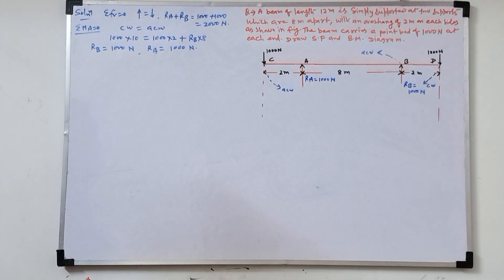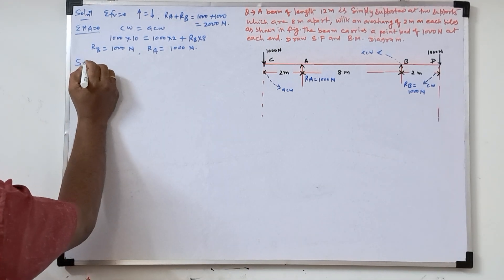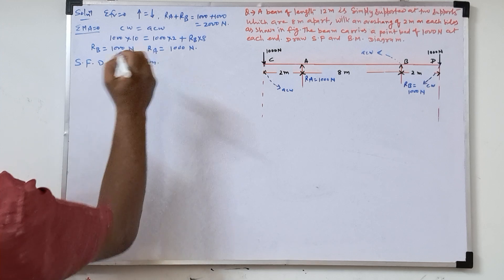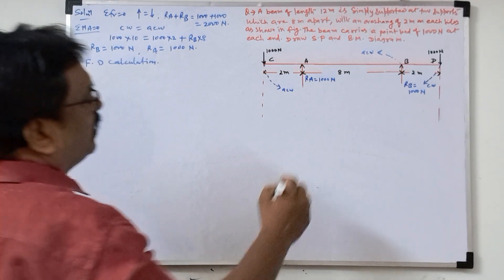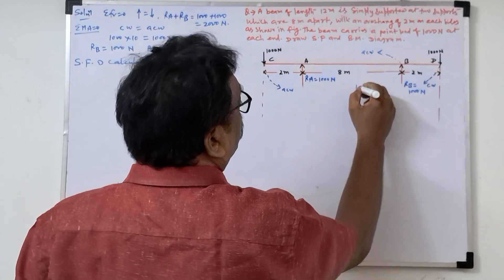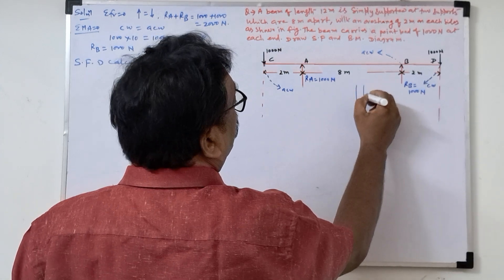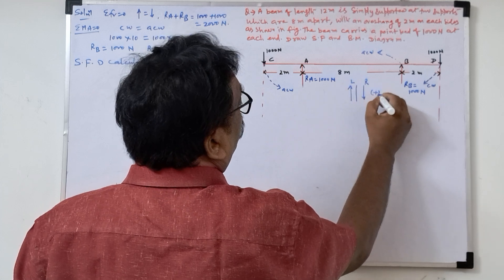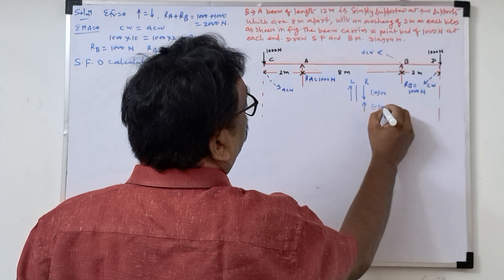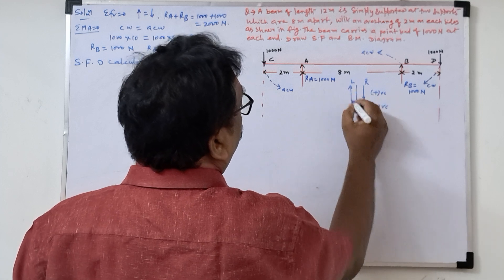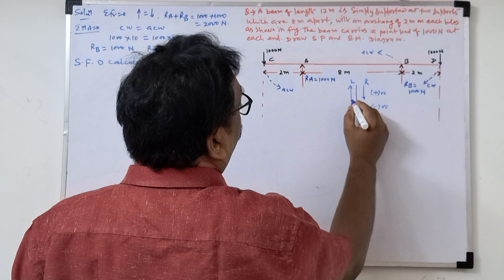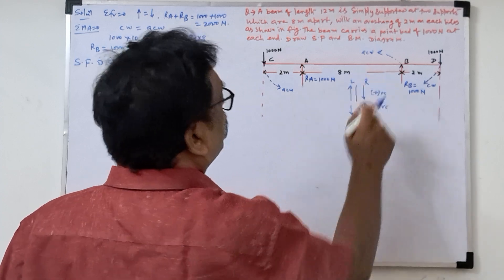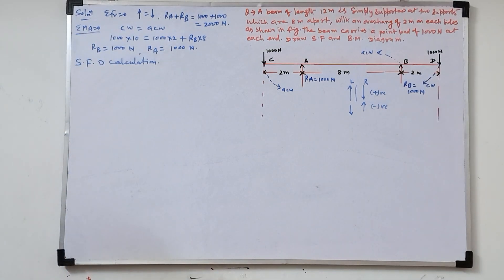Now we will find the bending moment diagram and shear force diagram. For the sign conventions: suppose this is downward force from the right side and upward force from the left side, we are taking as positive. And this we are taking as negative. If right side upward is negative, then this reverse — upward then downward will be negative. So this is the sign conventions from left side and right side.